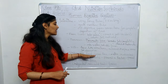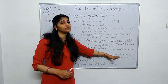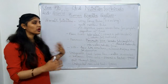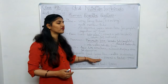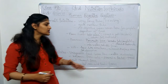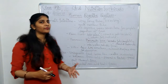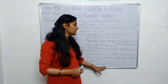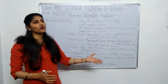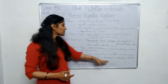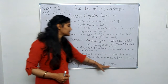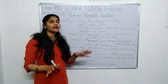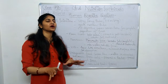In the large intestine, water is absorbed from the undigested food that came from the small intestine. What is left behind is a semi-solid form of food, which is temporarily stored in the rectum. This undigested semi-solid food is known as feces, and when we go to freshen up in the morning, it is passed out through the anus.